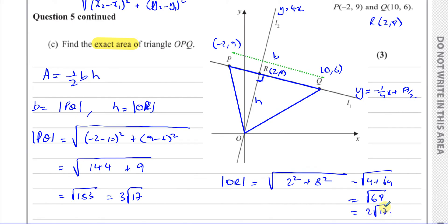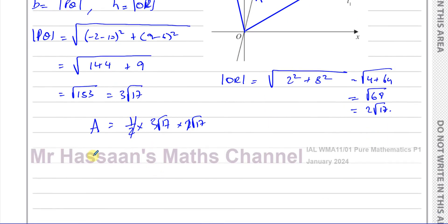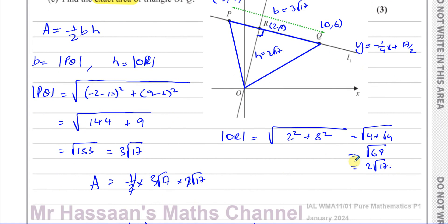Now we can calculate the area of triangle OPQ: area = (1/2) × base × height = (1/2) × 3√17 × 2√17. The 2 cancels with the half, leaving 3 × 17 = 51. The area is 51 square units.